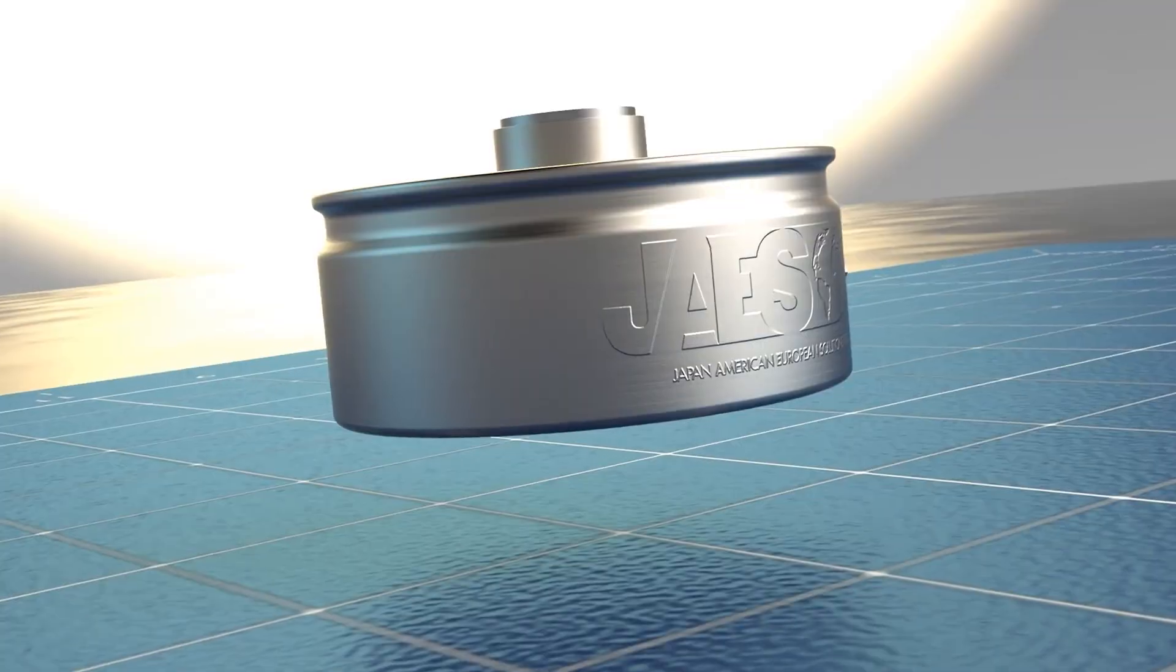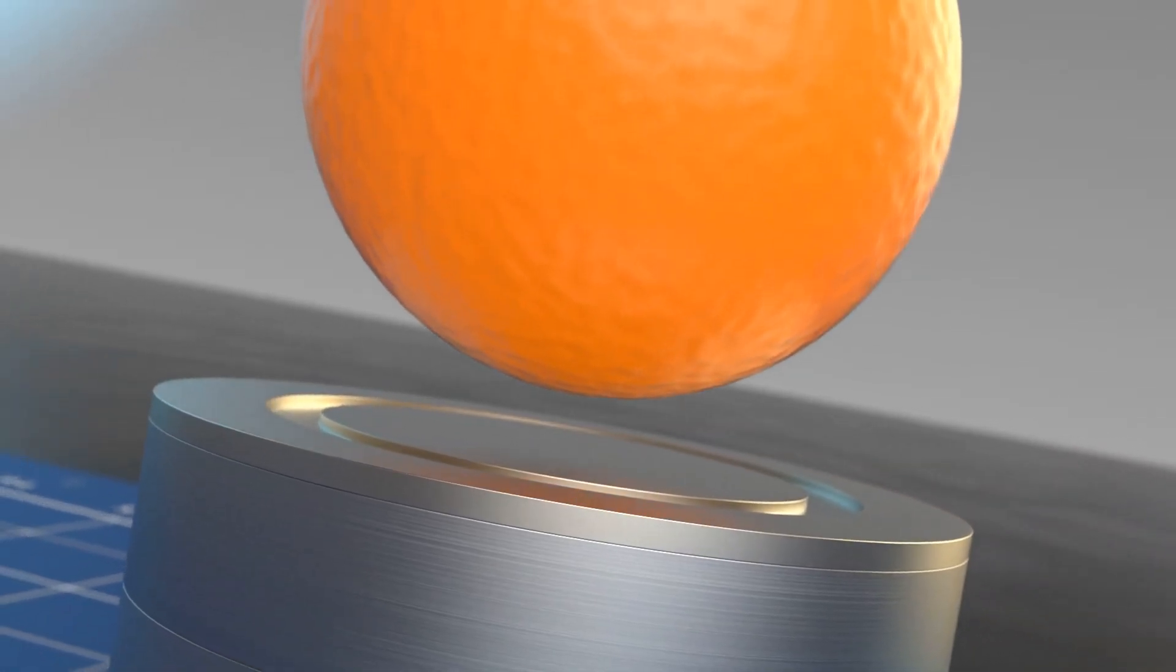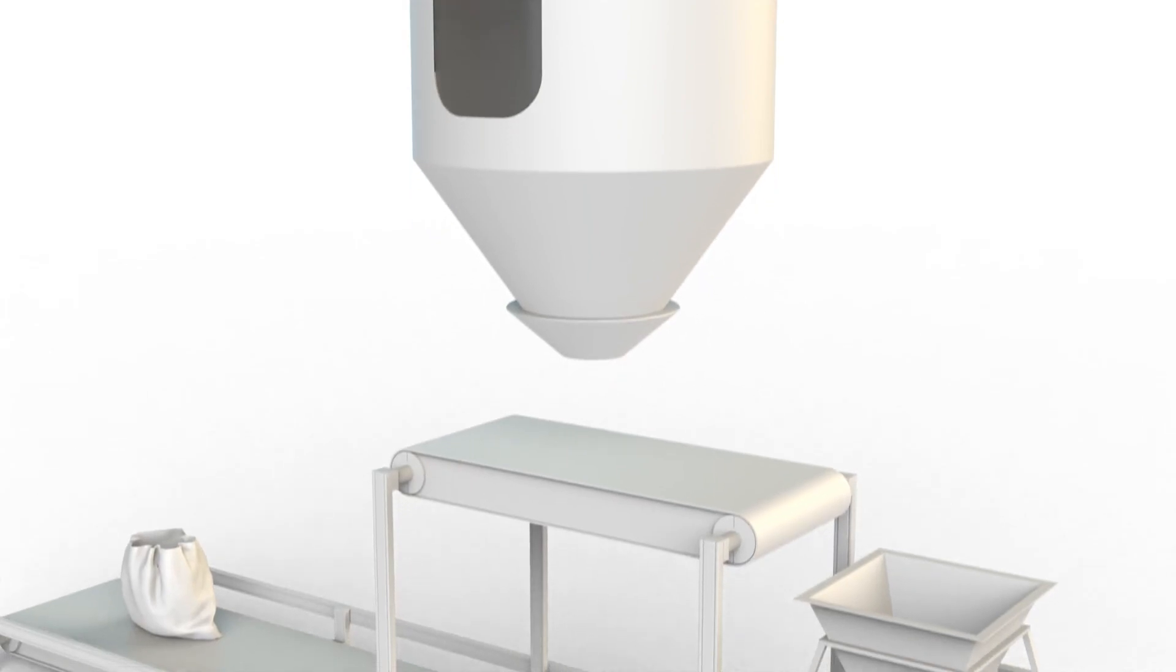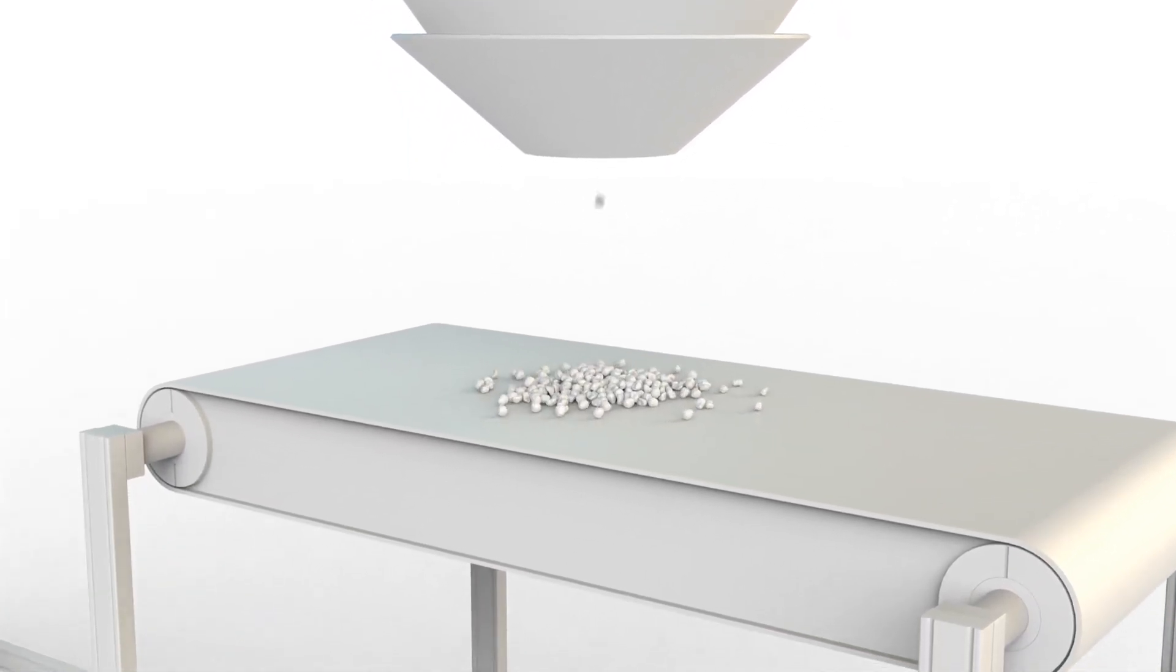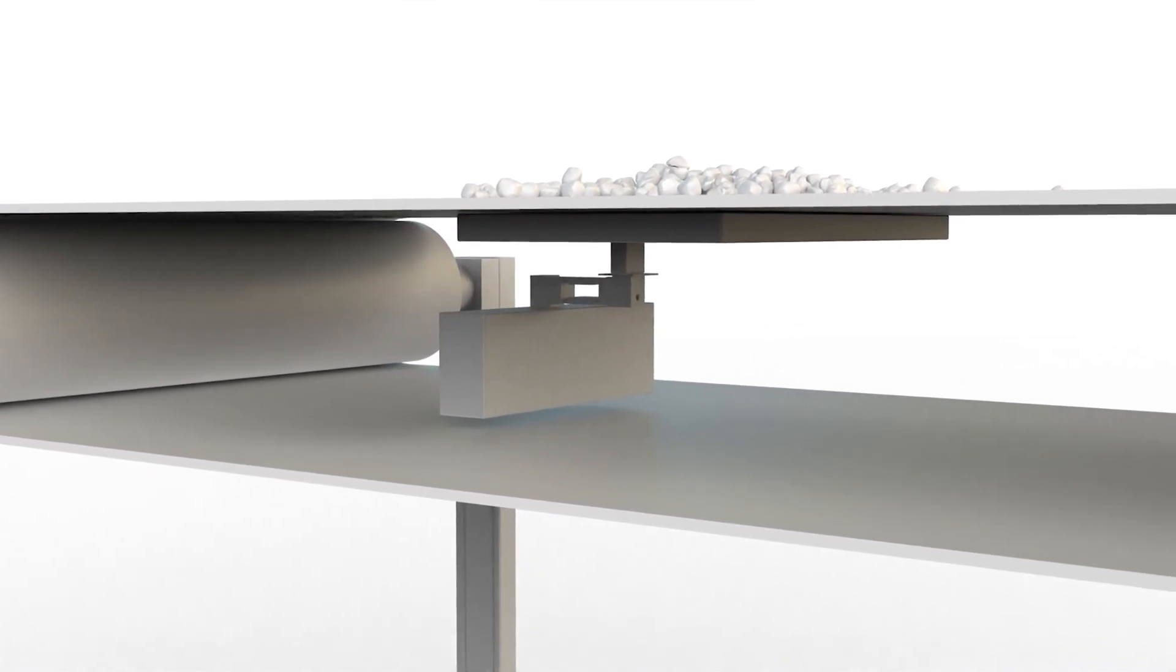We talked about the various types, now let's see some application examples. The first example can be made in a salt production chain. A tank drops salt onto a conveyor belt, which is weighed with the help of a load cell positioned under the belt.